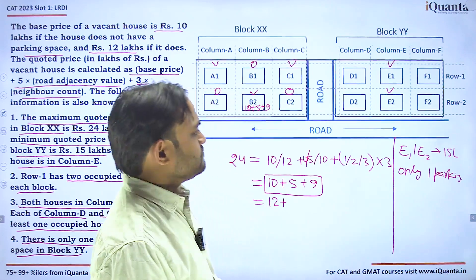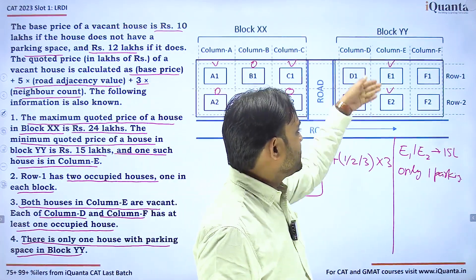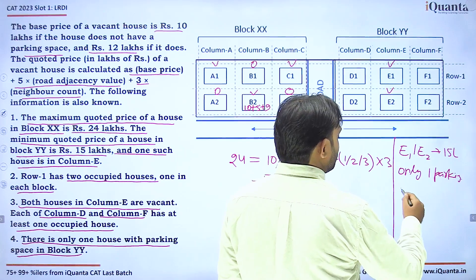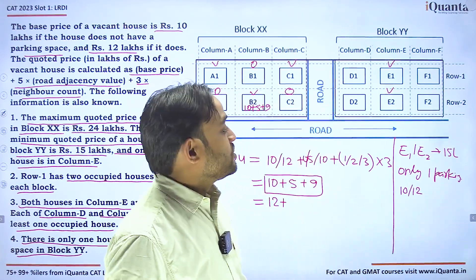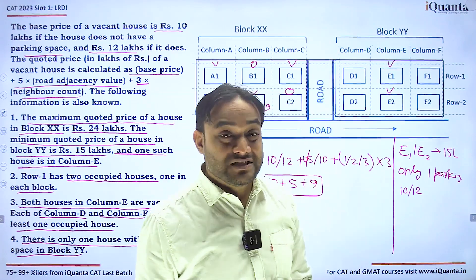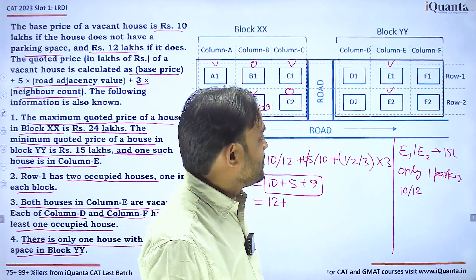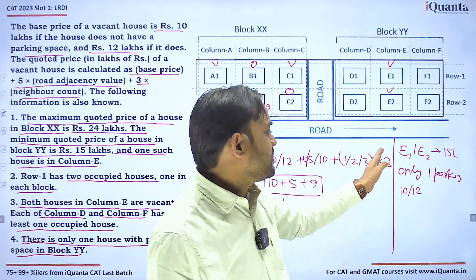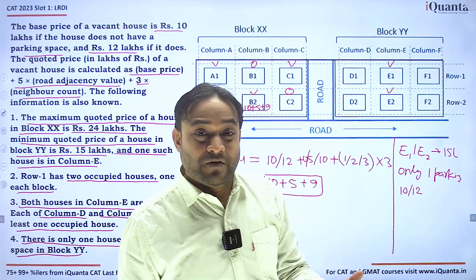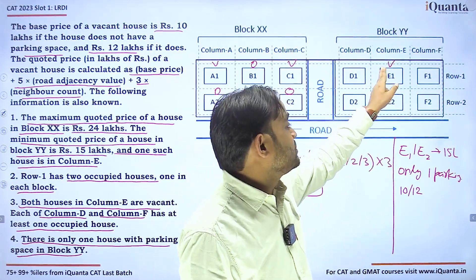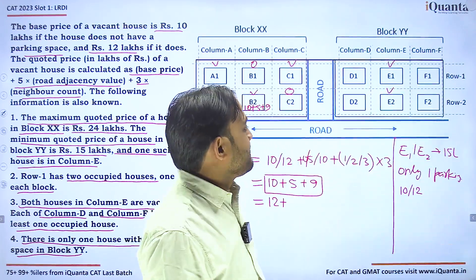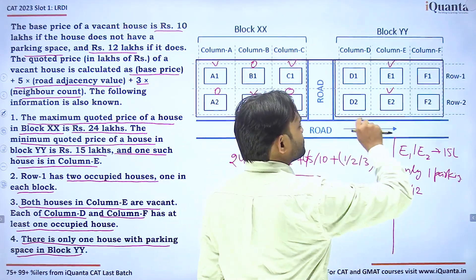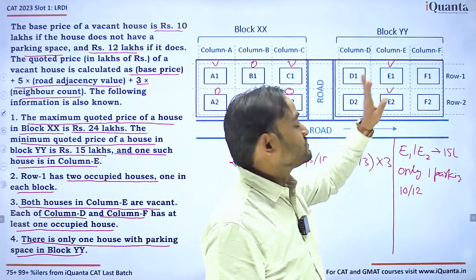For E1 and E2, both are vacant so base price is 10 or 12. Road adjacency for E1 is 0 and for E2 is 1. We observe 10 + 5 = 15, suggesting E2 with no parking and no neighbors could be 15. E1 could be 15 only with parking: 12 + 0 + 3 = 15, since E2 must have at least 15.